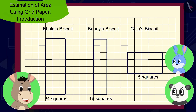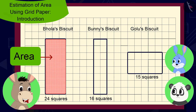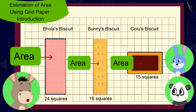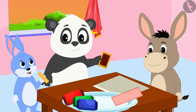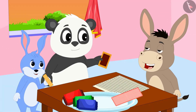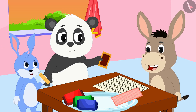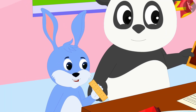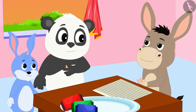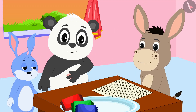So, we can say that the area of my biscuit is larger than the area of both your biscuits. Bhola explained to Golu and Bunny. This is such an interesting thing you have taught us, Bhola. Let us all share our biscuits and eat them. The three friends shared their biscuits and ate them with great pleasure.